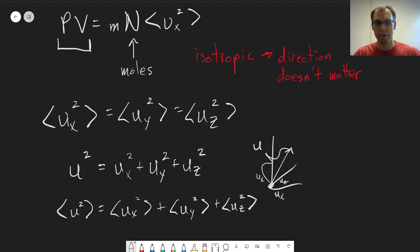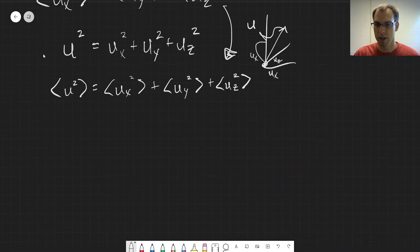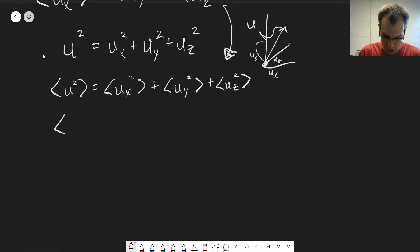So now we've related this back to something that we can measure. But we just said that all of these three are the same, so we can simplify this expression and just say that if we stick with the x direction, the average of u squared is going to be equal to three times ux squared, because all of these are equal to each other.